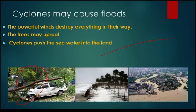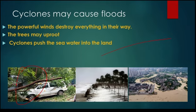Cyclones also push sea water into the land. Since cyclones normally form over the ocean, when the ocean is strongly cyclonic, the water comes out onto the land. They also bring heavy rains with them — strong rains that can last for hours or even days.